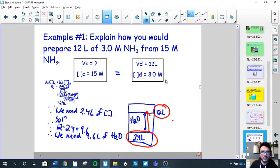Here's my verbal explanation. To make a 12 liter solution of 3 molar concentration from a 15 molar concentration, you need 2.4 liters of the concentrated amount. Then to that you would add 9.6 liters of water.